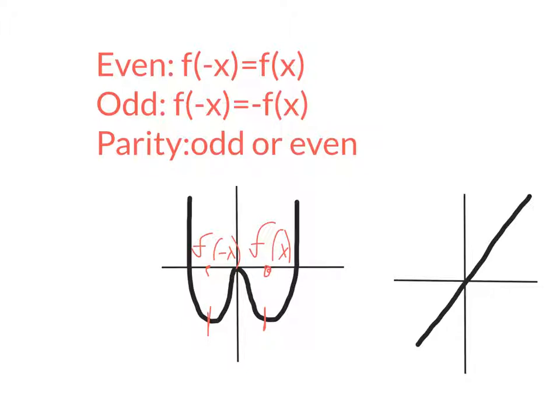Now if we go to this function over here, we can see that if we go to the x spot here, we find f of x. But if we go over here to negative x, we will find negative f of x as the y coordinate.